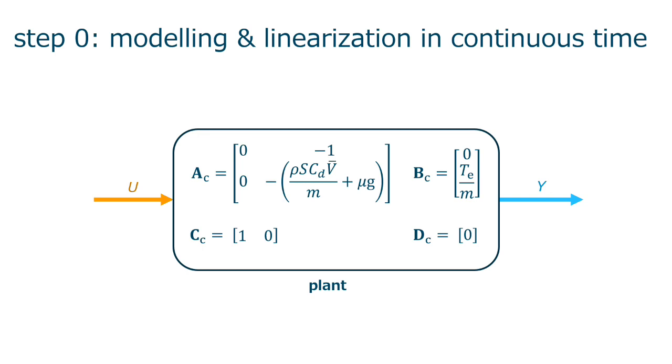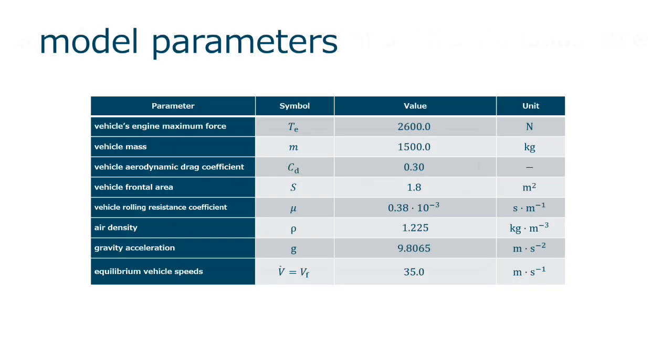Summing up, we define the plant state-space model by the set of matrices A, B, C, and D. That, together with the provided set of parameters, are the baseline for the control design.